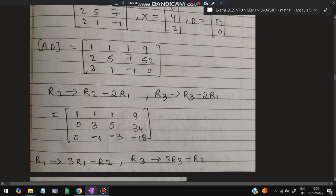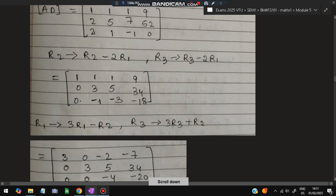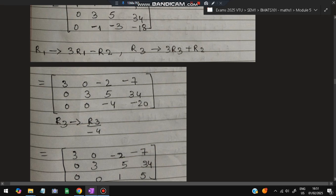We perform R2 = R2 minus 2R1 and R3 = R3 minus 2R1 to get zeros in the first column of rows 2 and 3. Then we perform R1 = 3R1 minus R2 to zero out the R1 second-column entry, and R3 = 3R3 + R2 to zero out R3's second-column entry. After that, we divide R3 by −4 to get a 1 in the diagonal and the value 5 in the last column.